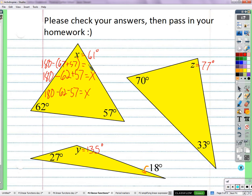Like that? Yeah. Okay, Diana? I did 67, 62 plus 57 minus 180 equals x.